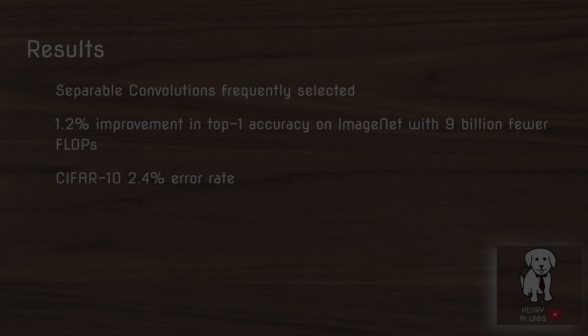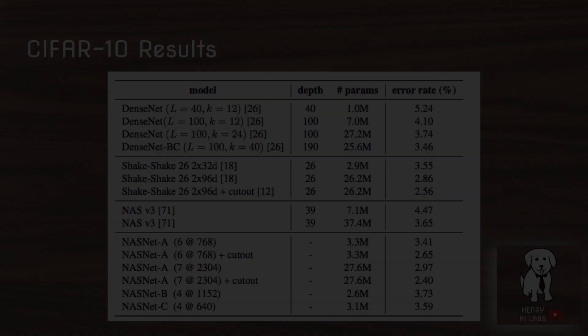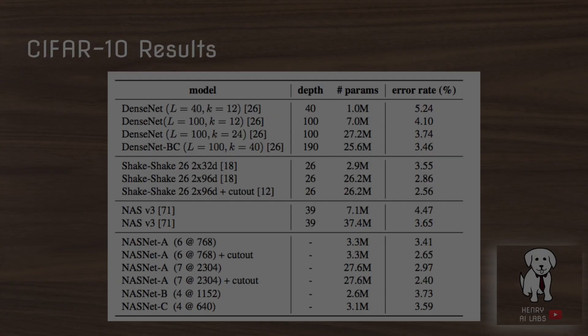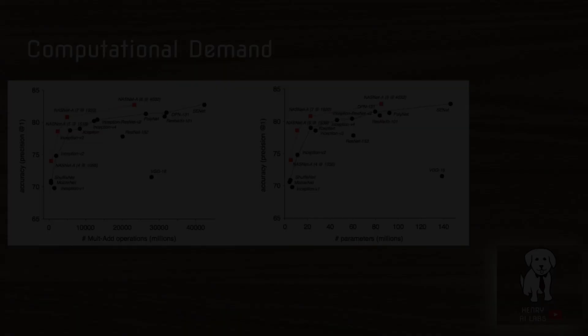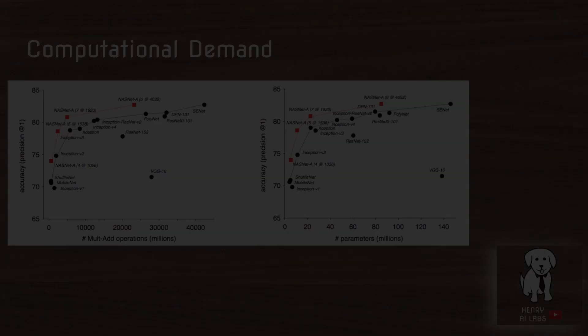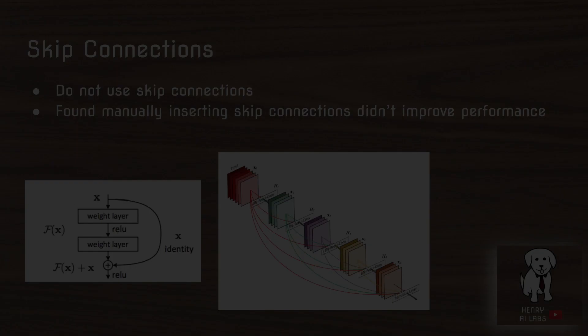The results show a 1.2% improvement in top-1 accuracy on ImageNet with 9 billion fewer floating-point operations per second — significant because this is fully automated with no human-designed features. The method also achieves a 2.4% error rate on CIFAR-10. A table compares neural architecture search against methods such as DenseNet and shake-shake regularization, and a plot shows that NAS achieves higher performance with less computation than previous human-engineered neural network designs.